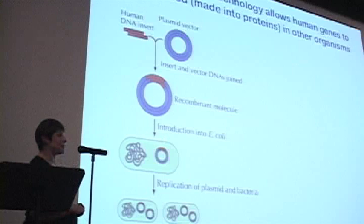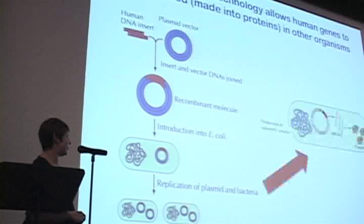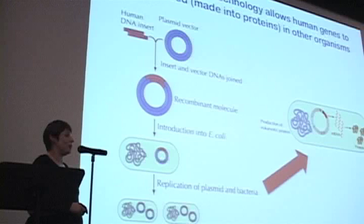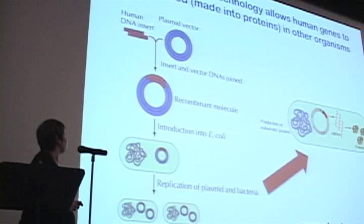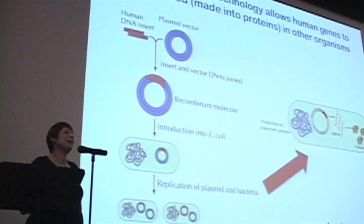The bacteria will replicate that human DNA along with their own, and you can actually get them to make proteins from that human DNA. You can then purify that protein and use it to treat human disease. And a really, well, an example of this is insulin to treat diabetes. Before this type of technology was available, insulin was purified largely from cow or pig pancreases with varying results.